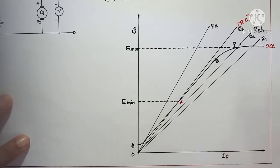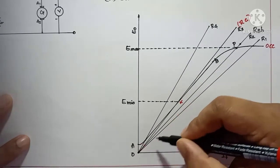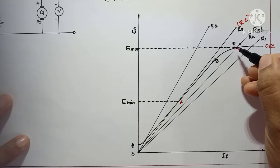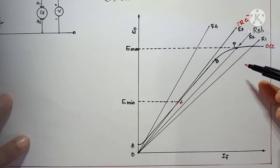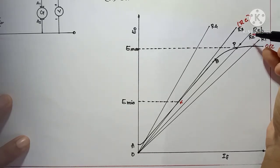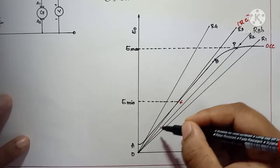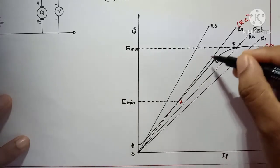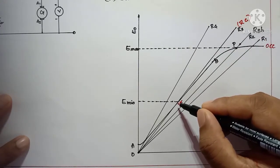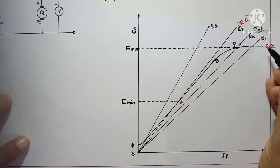If I decrease the resistance value, there is no use — the graph will not touch the open circuit characteristics. AP is my operating point of the generator, and P is the point at which the generator can build up maximum voltage. At a particular value, if I increase my shunt field resistance, the resistance line shifts progressively until at a particular point the shunt field resistance line just touches the OCC at point K — meaning the shunt field resistance line becomes a tangent to the OCC at a particular speed.